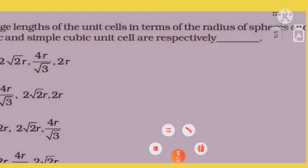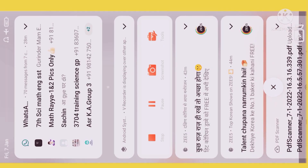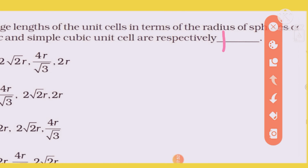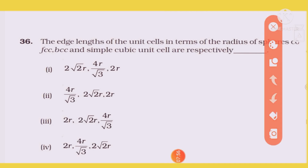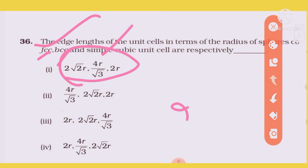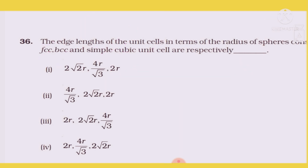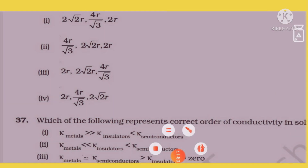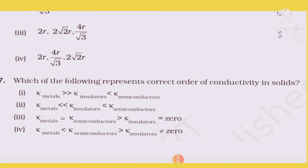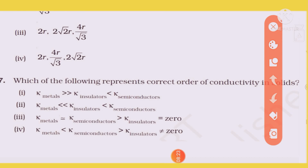Last question: For FCC, BCC, and Simple Cubic unit cells, radius formulas are important. The radius R relates differently to edge length for each structure. These radius formulas — for simple cubic, BCC, and FCC — are the most important formulas to remember.